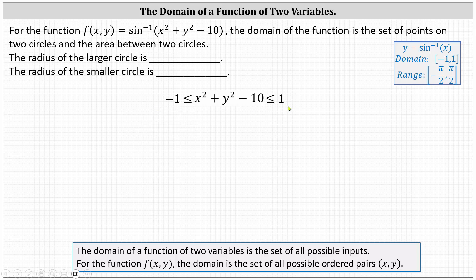Let's break this up into two inequalities. We can read this type of compound inequality starting in the middle and reading to the left, as well as starting in the middle and reading to the right, giving us an AND compound inequality.